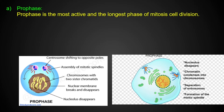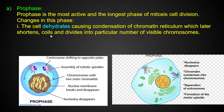Prophase is the most active and the longest phase. It is the first stage of karyokinesis when the cell begins to divide.